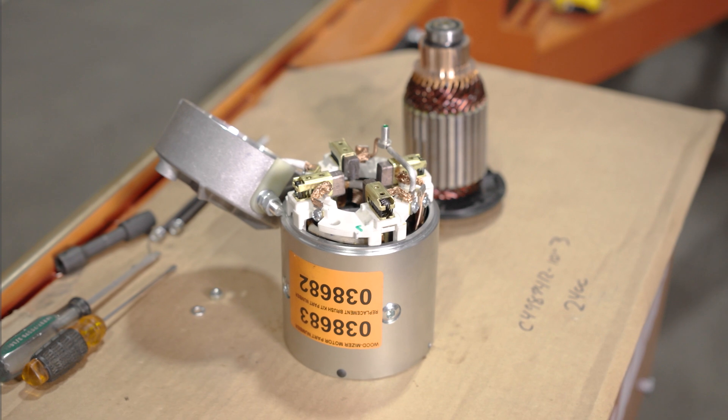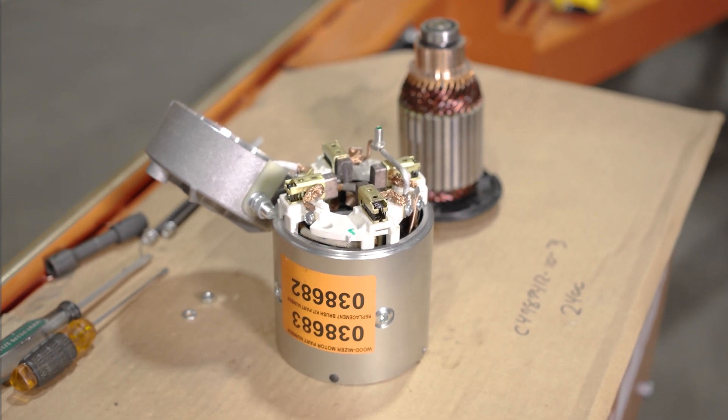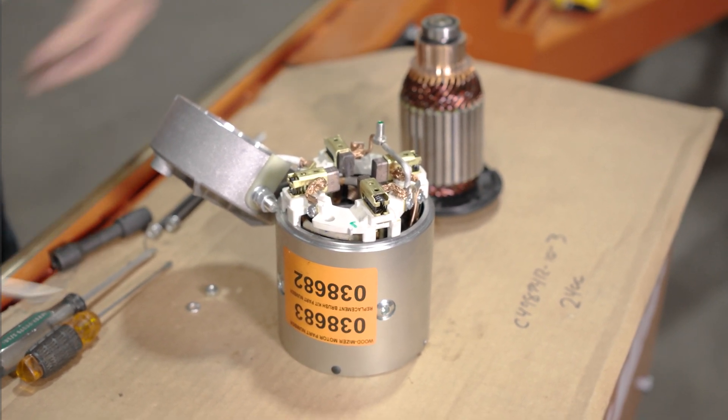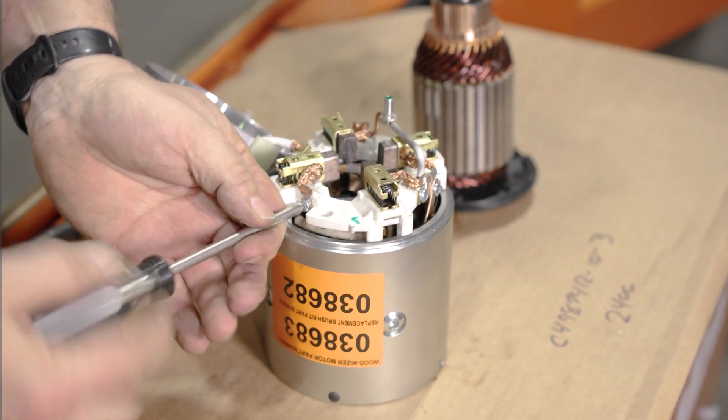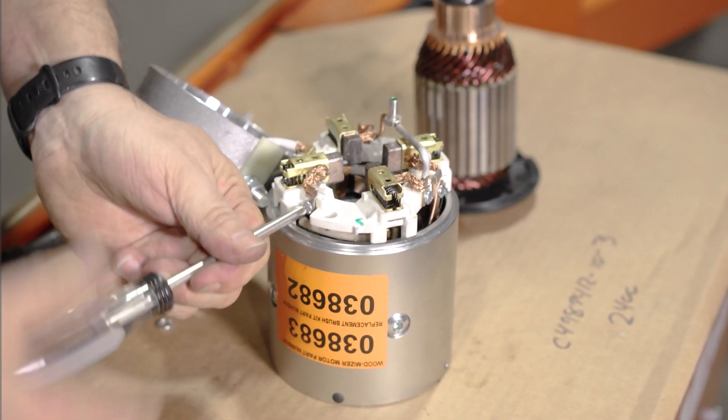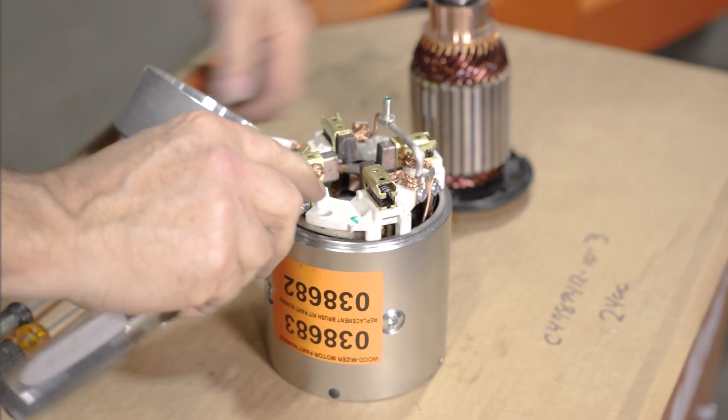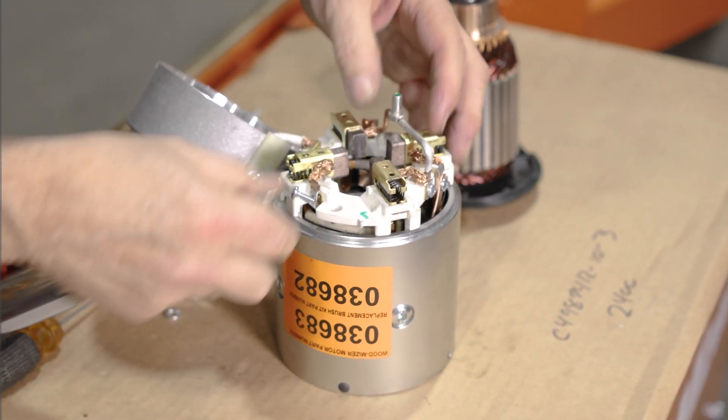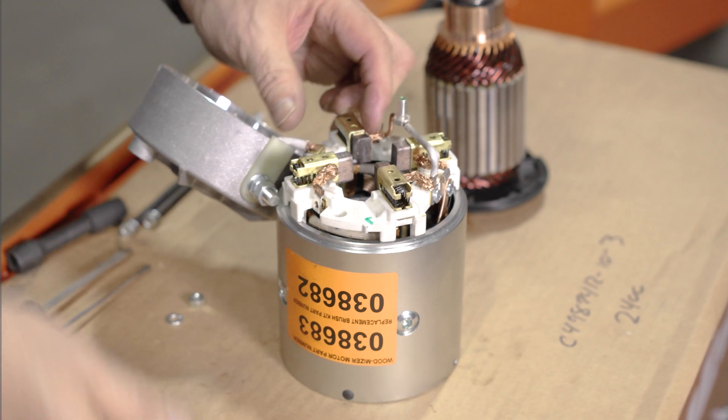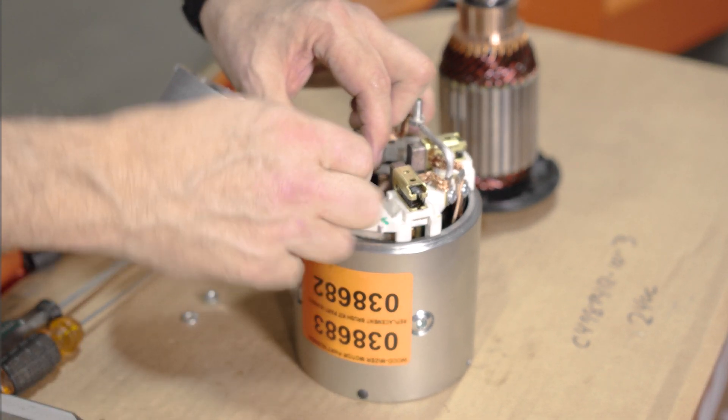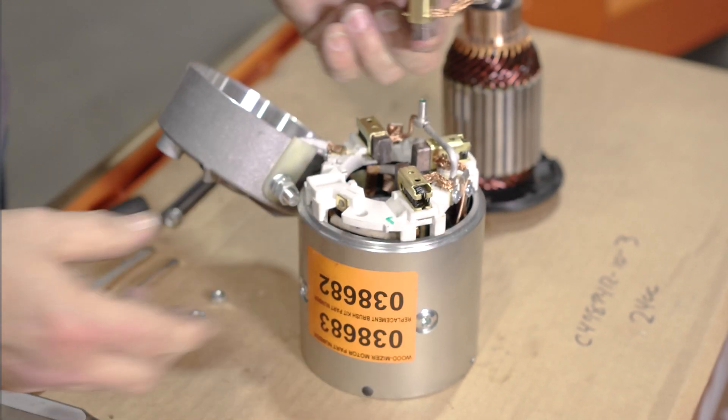Get your Phillips head screwdriver and unscrew the brush wire. Try not to lose those. And you can see how the brush cartridge will just slide right out of its slot.